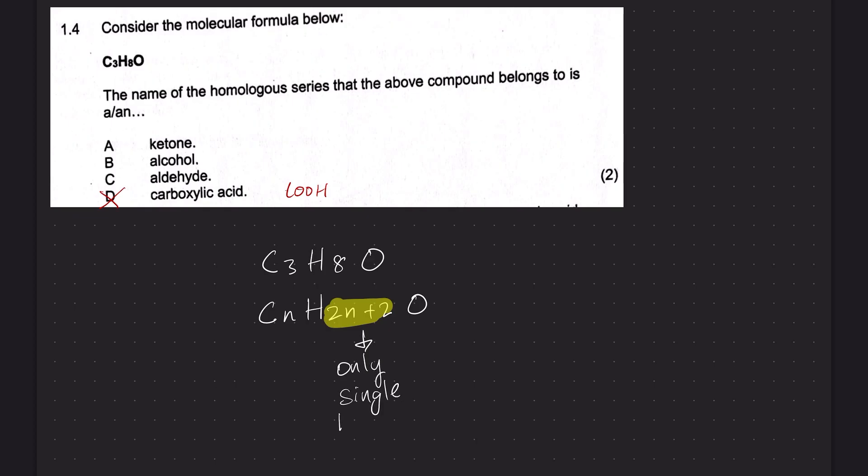Only single bonds. Now, if you think of a ketone, a ketone has a carbon double bond O. An aldehyde also has a carbon double bond O. The only one that has only single bonds is an alcohol. So the answer here is B.